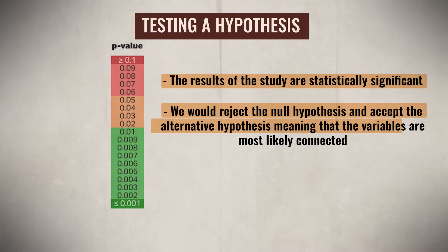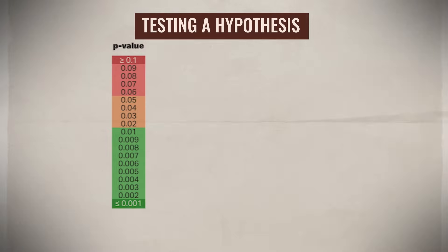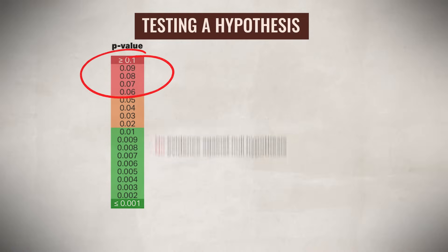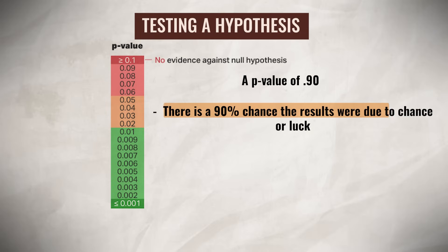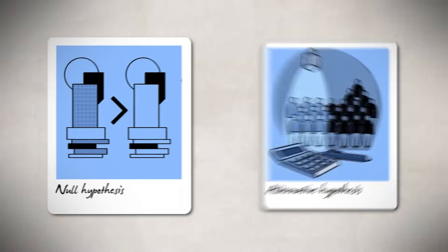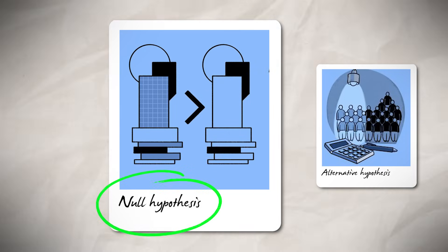So a p-value of 0.03 would mean that we would reject the null hypothesis and accept the alternative hypothesis, meaning that the variables are most likely connected. The smaller the p-value, the stronger the evidence is against the null hypothesis, and the more likely it is that the results are statistically significant. While on the other hand, the larger the p-value, the more likely it is that the results of the experiment were due to chance or luck. For instance, a p-value of 0.90 would mean that there is a 90% chance that the results were due to chance or luck. So we should reject the alternative hypothesis and accept the null hypothesis.